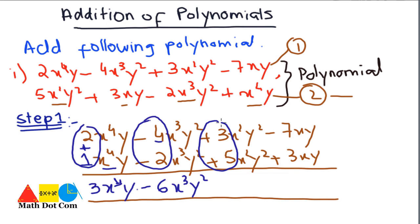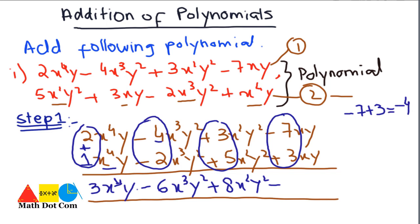For x²y²: both constants are positive, so we get +8x²y². For xy: the sign of the larger number is minus, and with one negative the operation is subtraction — −7 + 3 gives −4, so −4xy. This is how you add two polynomials: arrange in descending order, align like terms, then add using sign rules.